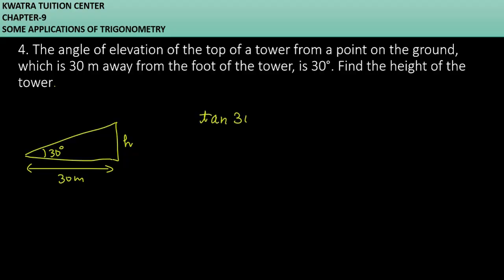So I can use tan 30 equal to perpendicular over base. Tan 30 value is 1 over root 3. We don't know perpendicular. Base we know it is 30.